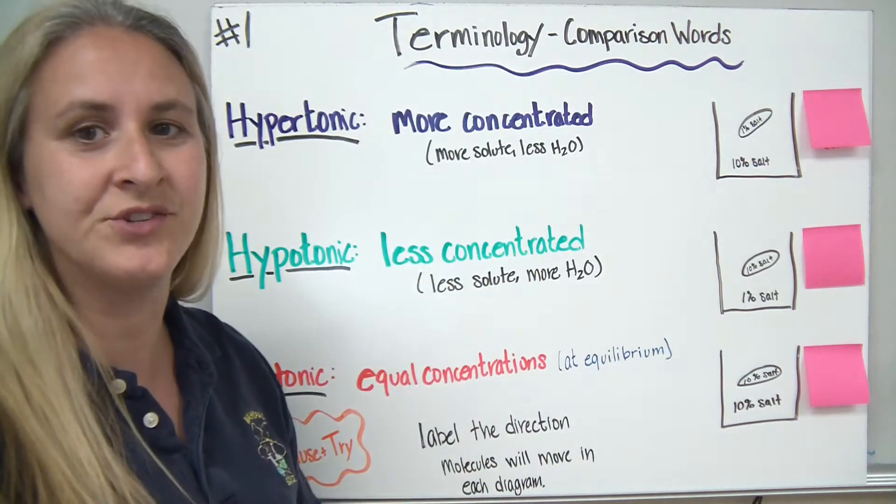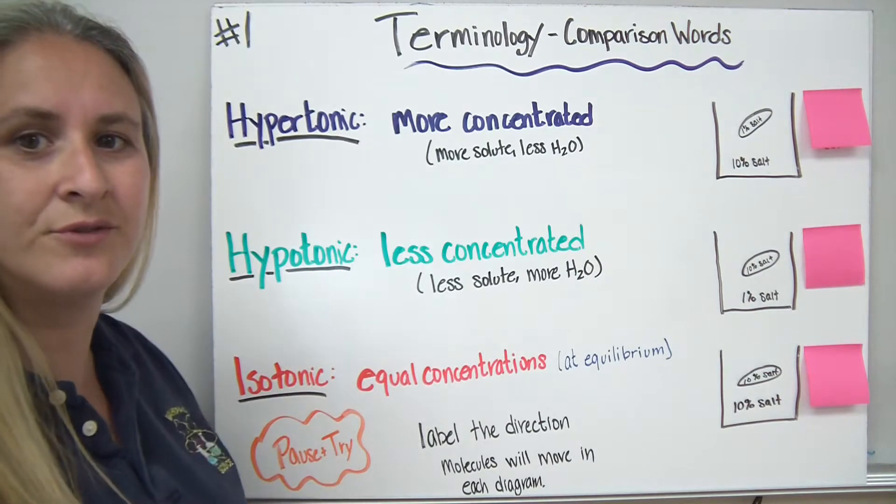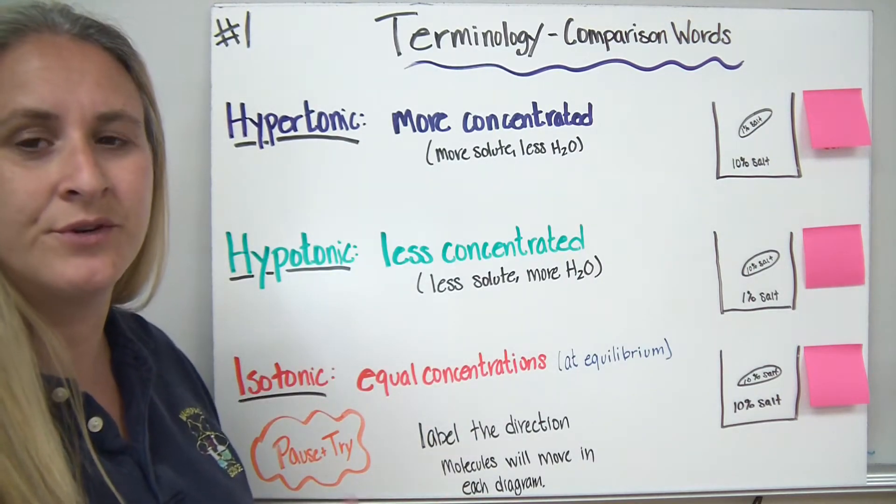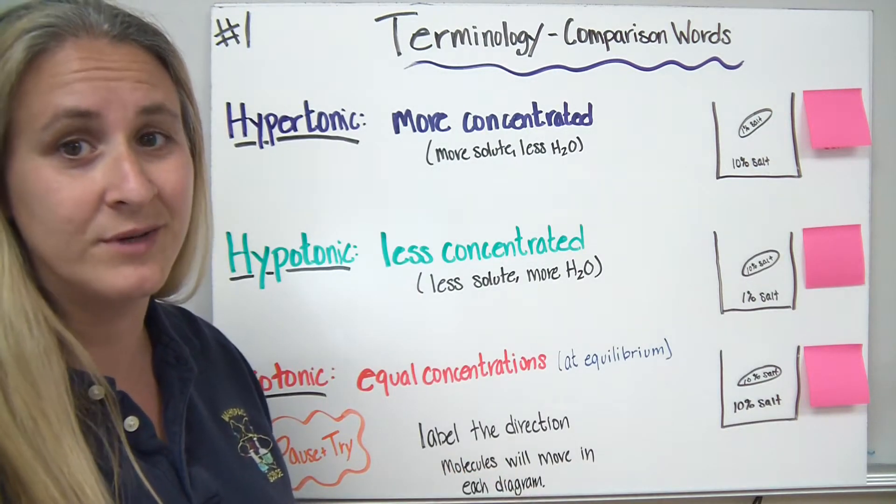Today we need to review some terminology, comparison words, when we talk about concentrations of solutions. There are three main terms that we use in order to describe how concentrated a solution is relative to its surroundings.